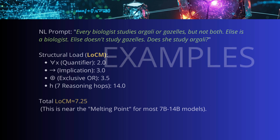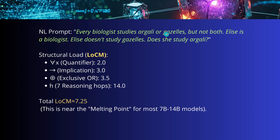Absolutely fascinating. If you calculate the LOCM for a prompt with "for all x," quantifiers, implications, and exclusive-or, you get a LOCM of about 7. But 7 is near the melting point — the phase transition in logic for most 7B to 14B models. This indicates that such a task is already at the edge of the causal reasoning capacity of those LLMs. With this metric, once you run tests and find your model's phase transition points, you can determine from the query alone which model is able to solve it.